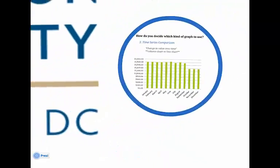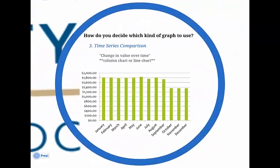A third type of comparison is a time series comparison. This is defined as highlighting the change in value over time. The book suggests using a column chart or line chart. The ideas discussed in this book represent one system for helping you to choose your graph type. Ultimately, however, you will need to choose the graph type that best helps you to get your point across.